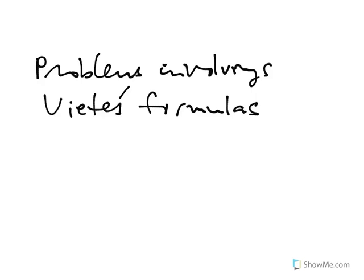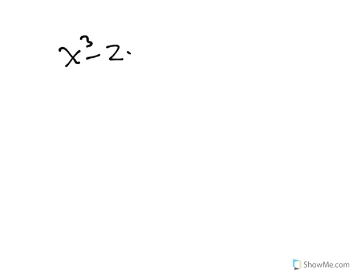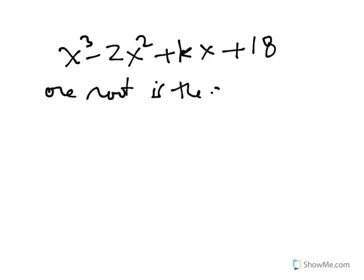There are a series of problems that you can solve if you know about how the sum of the roots, or the sum of the roots taken two at a time, or three at a time, or four at a time, relates to the coefficients. An example of this is if you have a polynomial like x cubed minus 2x squared plus kx plus 18, where we don't even know the coefficient k. They want to know the roots, which seems impossible since k could be pretty much anything, but they give us an extra piece of information: one root is the negation of one of the others.